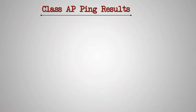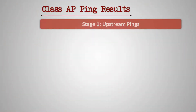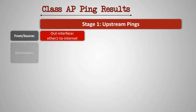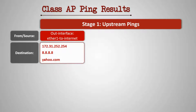So far we have made sure that our class access point is correctly connected to the main switch and has internet connectivity. The class AP is able to successfully ping all three upstream destination addresses via its ether one out interface.